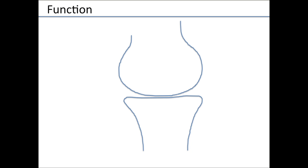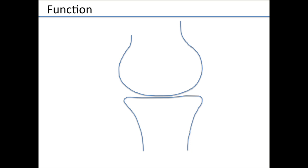The next thing we're going to talk about is function — what does the meniscus do? The meniscus is very important in helping to increase the conformity of the joint and decrease the contact stresses. You have the curved femur that touches the leg bone, so there's a lot of contact stress at that one point. When we add the meniscus in, it makes the joint more congruent, there's more contact area, and the stresses are dispersed more — decreasing the contact stresses across the knee joint.